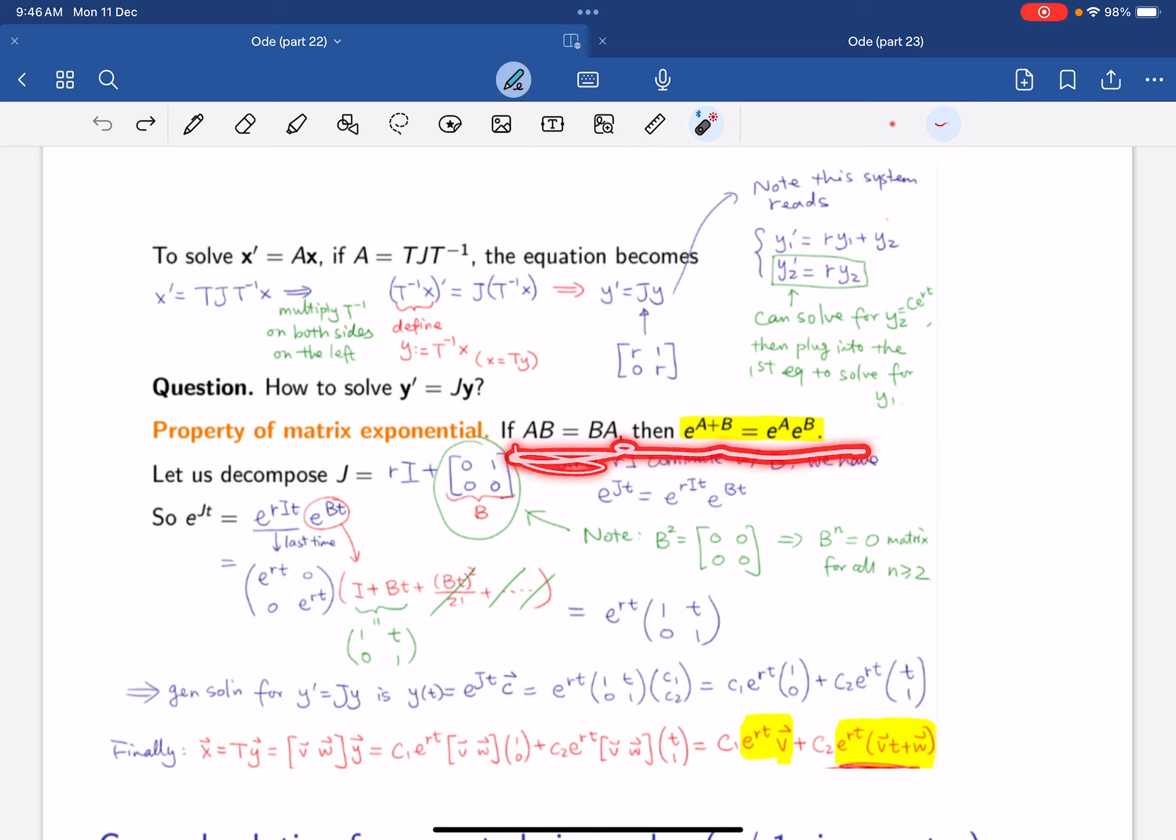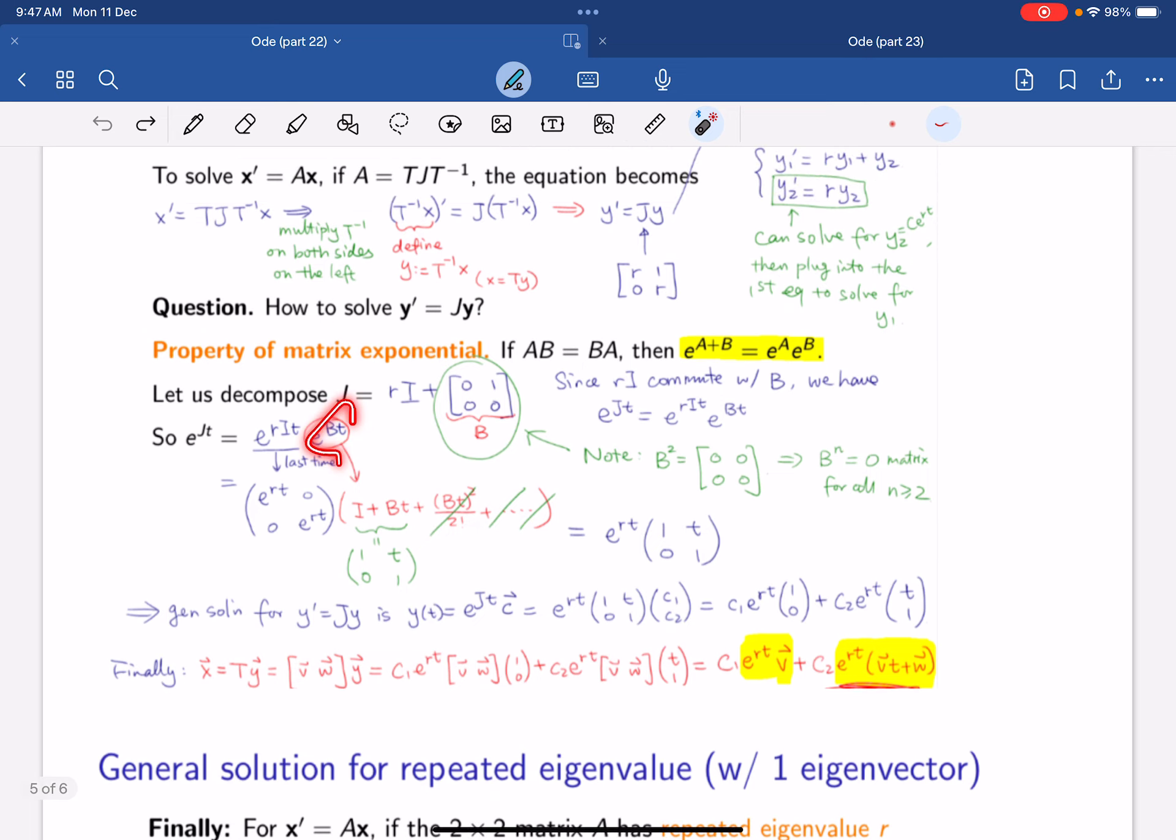If we use the property of the matrix exponential, if AB equals to BA, then e to the power of A plus B equals to e to the power of A times e to the power of B. So we can decompose the J first into RI plus [0, 1, 0, 0]. Then e to the power of JT now will just be e to the power of RIT times e to the power of BT. And B is this thing. So this thing can be expanded out. And you should see that the B squared onwards, any B above N, where N is larger than 2, it will all be 0. So this part will get cancelled. So we only left with this, which is just this matrix with 1, T, 0, 1. Then you multiply this. You get this result.